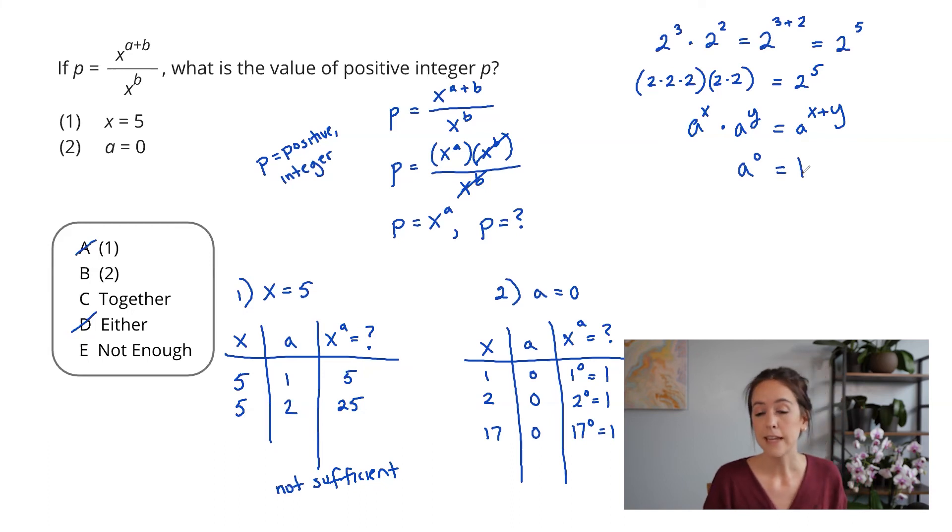And that means that statement two is actually sufficient. So even though we don't know what x is, we actually don't care. X to the a, which is what we're looking for, is always one. And that's going to make this sufficient. Meaning I can go ahead and choose answer choice B.